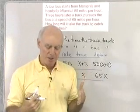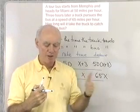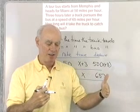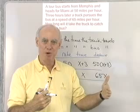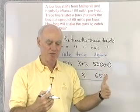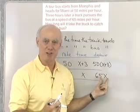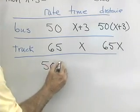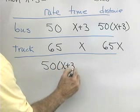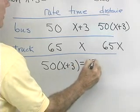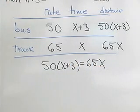They both leave from the same point. One leaves earlier than the other, and at some point the truck overtakes the bus — at that point they've both traveled the same distance. So to set up an equation, the distance the bus travels, 50 times (x plus 3), must equal the distance the truck travels, 65x.